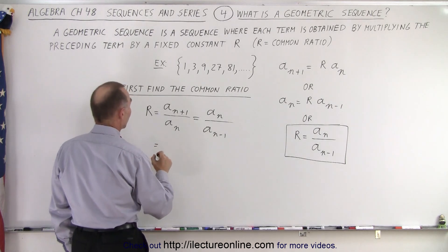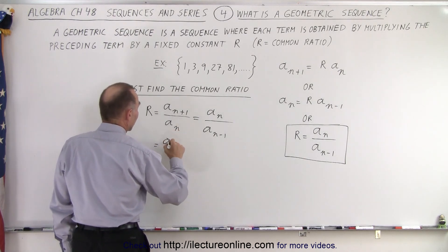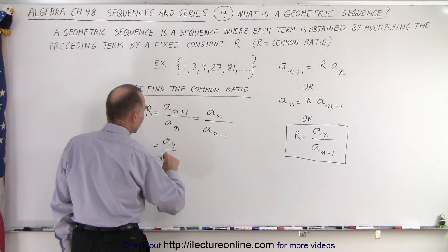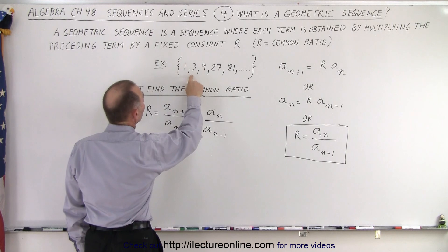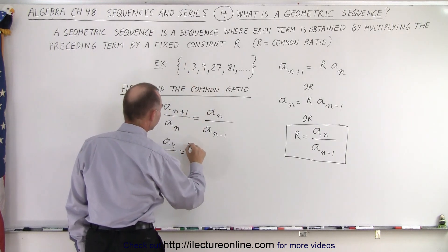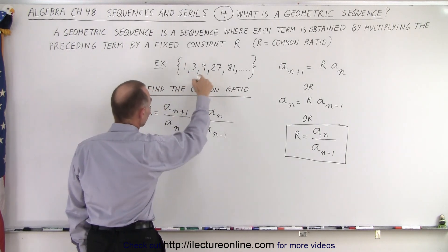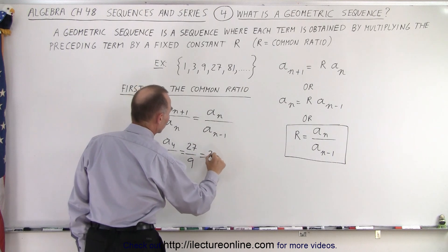So in this case, let's say for an example, we pick the fourth one, a sub four, and we divide it by the previous one, a sub three. In this case, a sub four is 27, and a sub three is nine, and that ratio is equal to three.